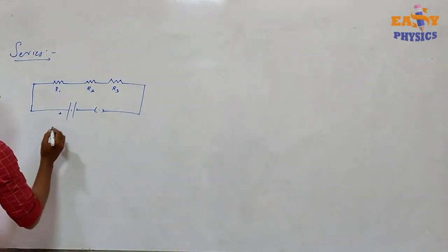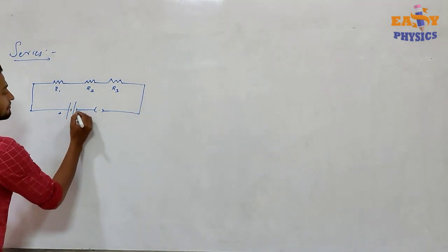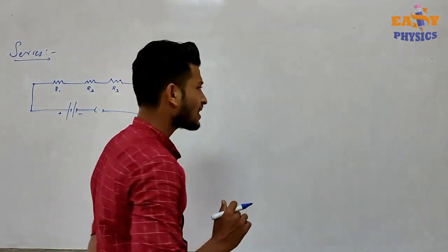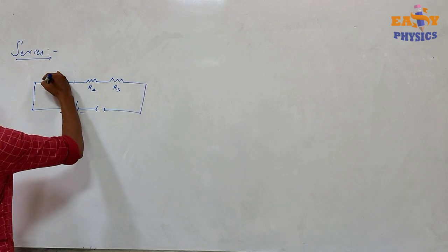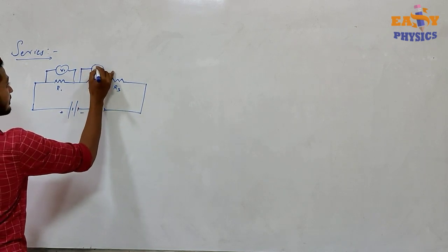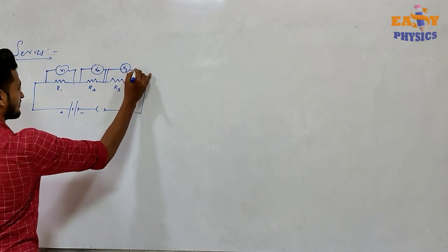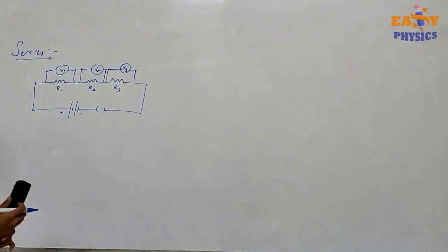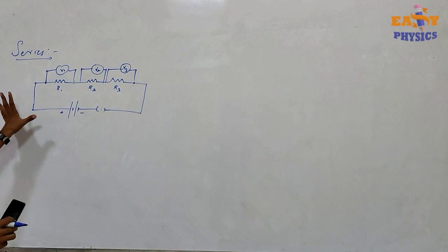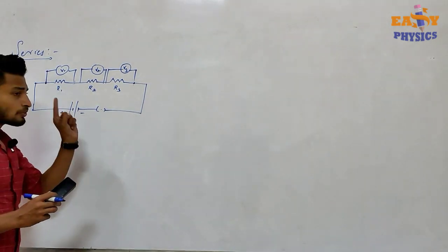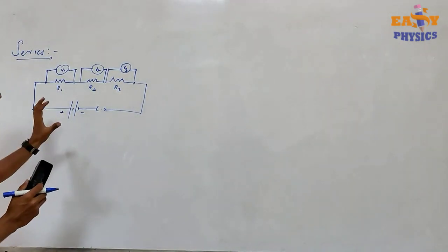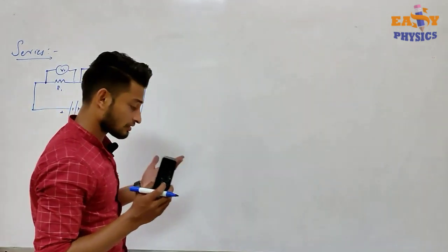We have to connect one cell, then two cells, and one battery. We also connect one voltmeter. This resistance R2 has V2 and R3 has V3. If the resistors are connected in series and one element is removed, this creates a short circuit — that's why the circuit will not work.